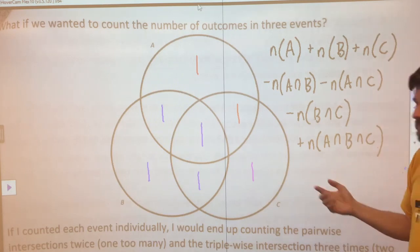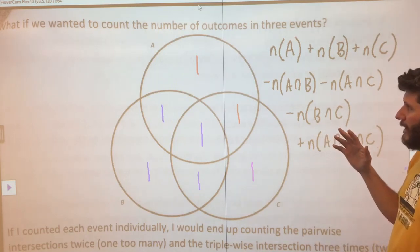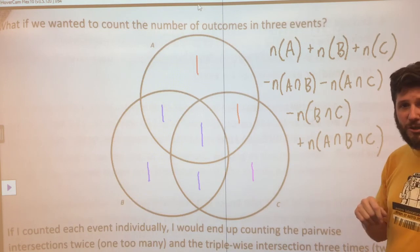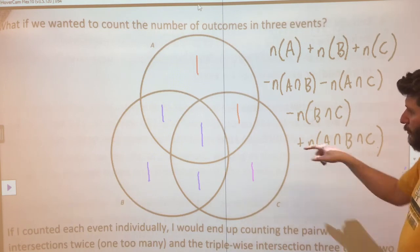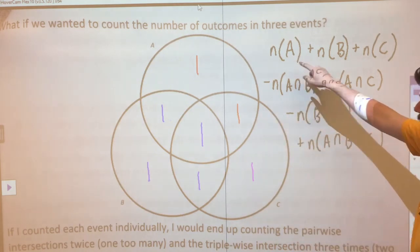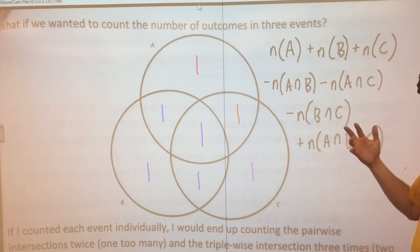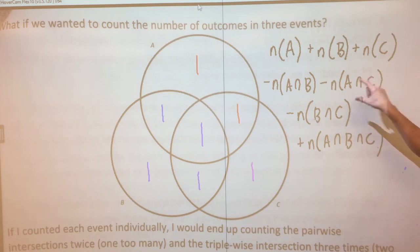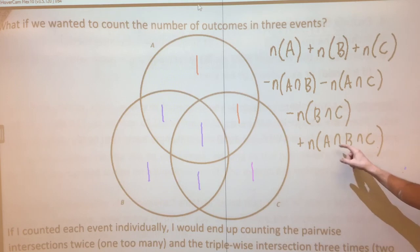And so this highlights the principle of inclusion-exclusion for a three-way set. We counted each thing in one set once. Then we subtract away the things that are in the two-way intersections once. And then we add back the thing for the three-way intersection.